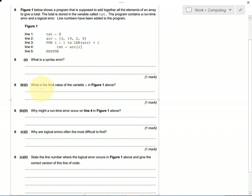So what is the final value of variable i in figure 1? The final value will be 5 because it starts at 1 and keeps going until we get to the length of the array plus 1.